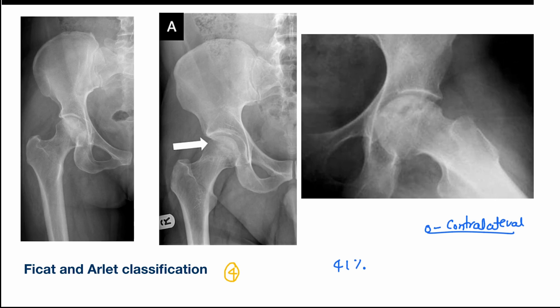Stage 1 is the early resorptive stage. On X-ray, we can see minimal osteoporosis or blurring and poor definition of the bony trabeculae at the site of involvement. Stage 2 is the reparative stage, where demineralization appears in the form of small cysts within the femoral head, and there can be patchy sclerosis, usually in the superolateral aspect of the femoral head, which is the main weight-bearing area.